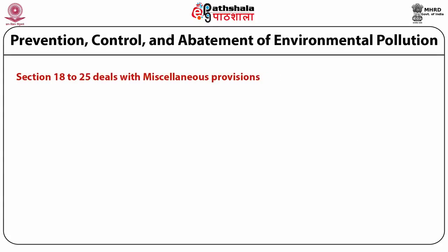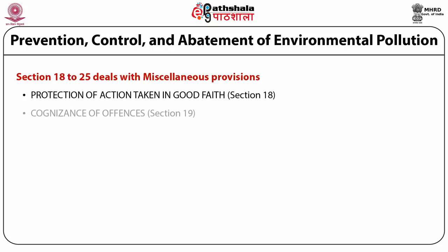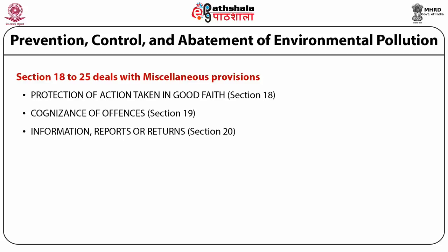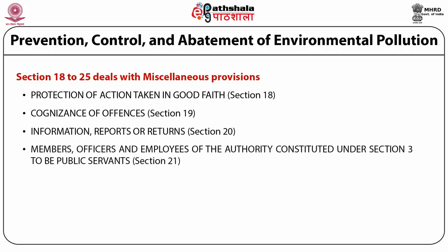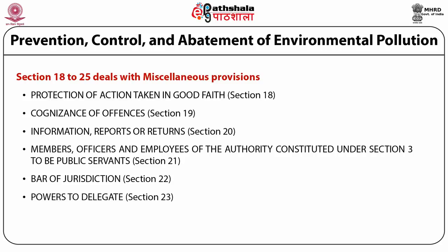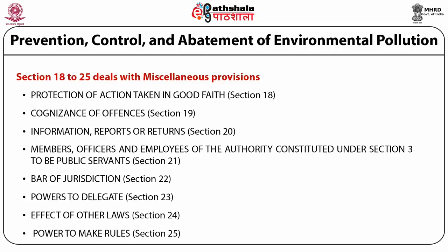Sections 18 to 25 deal with miscellaneous provisions, which are related to protection of action taken in good faith (Section 18), cognizance of offenses (Section 19), information reports or returns (Section 20), members, officers and employees of the authority constituted under Section 3 to be public servants, bar of jurisdiction (Section 21), powers to delegate (Section 22), effect of other laws (Section 23), and power to make rules (Section 25).